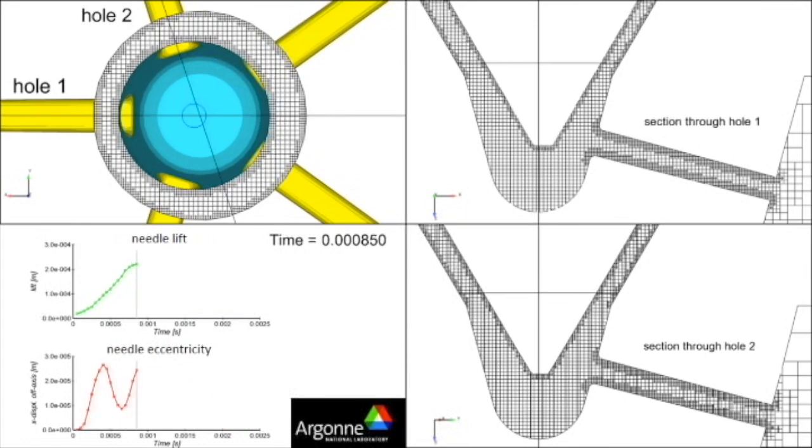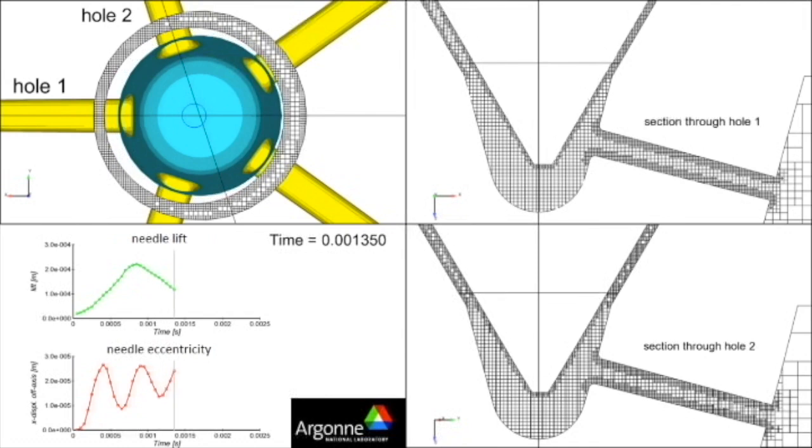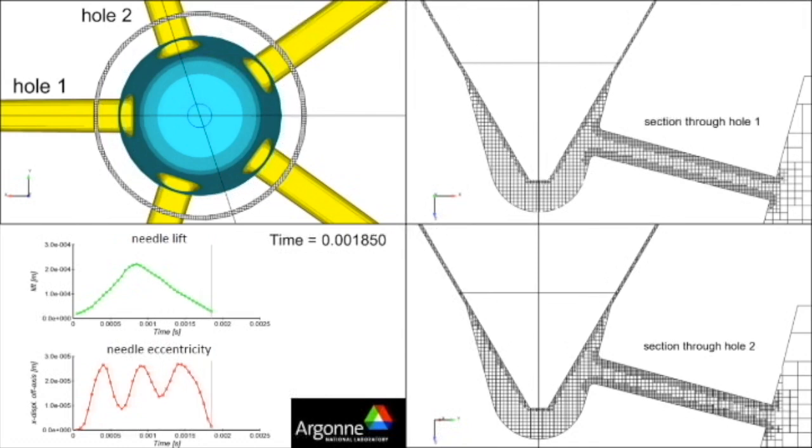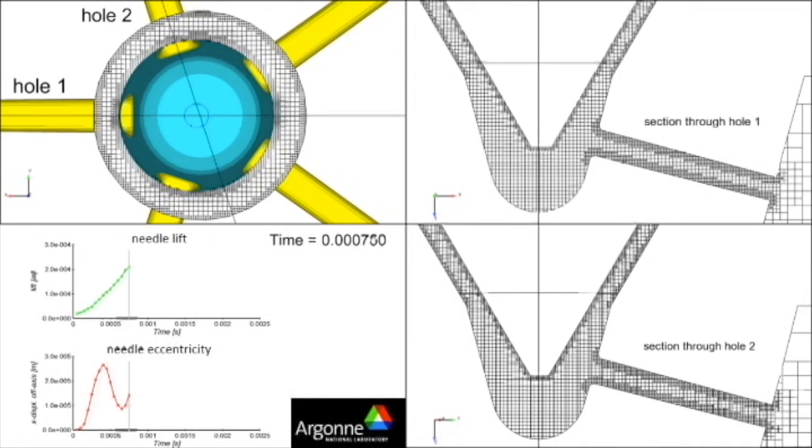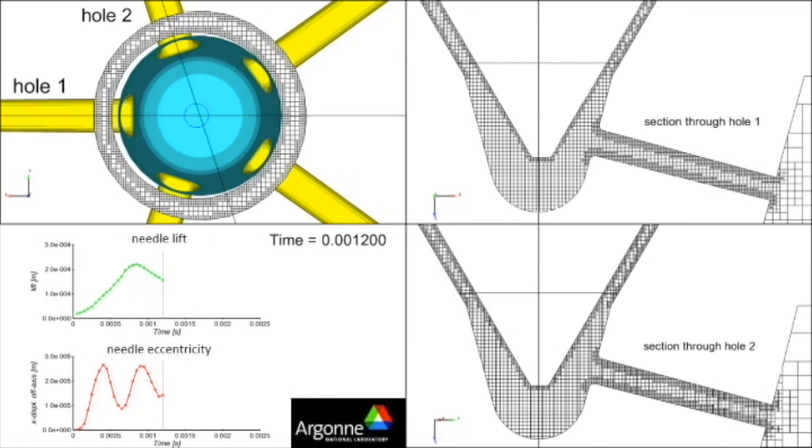The needle wobble peaks at about 10% of the 250 micrometer needle lift. Two of the peak needle wobbles coincide with low needle lifts, while one peak needle wobble coincides with the peak needle lift.